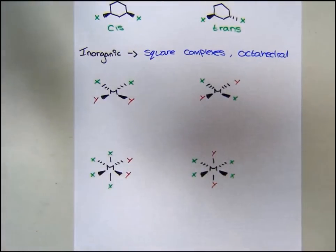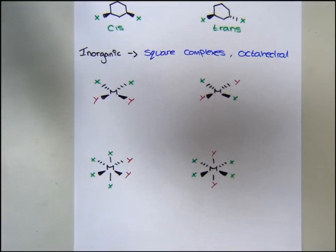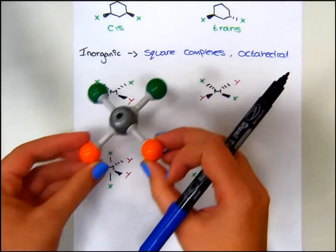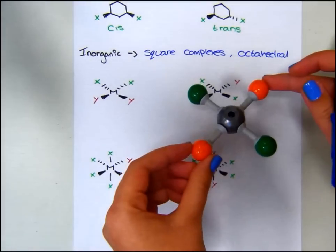These are examples of a square planar complex. On the first one, we can see that we have two X's away from us, and the Y's are pointing towards us. This looks like this. Whereas the other isomer shows one X pointing forwards and one X pointing back, and same for the Y. This looks something like this.